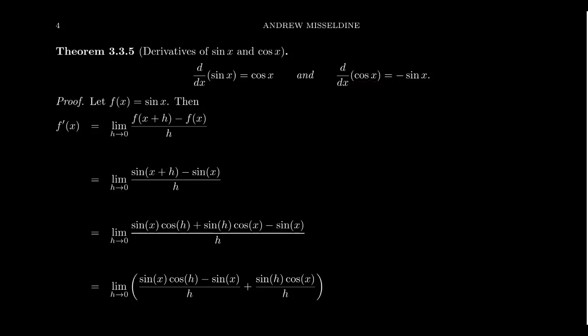Let's see why the derivative of sine is equal to cosine. If we take our function f to be sine of x, we want to compute f prime of x, which by the definition is going to be the limit as h approaches 0 of f of x plus h minus f of x, all over h. This is just the definition of the derivative.